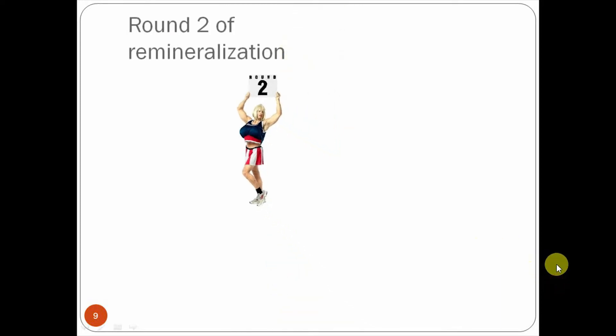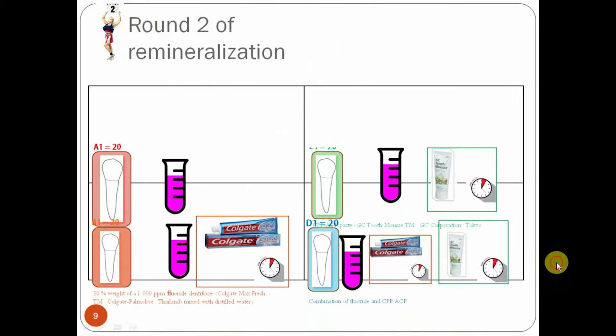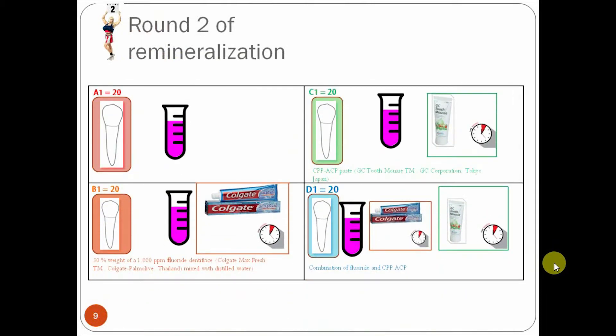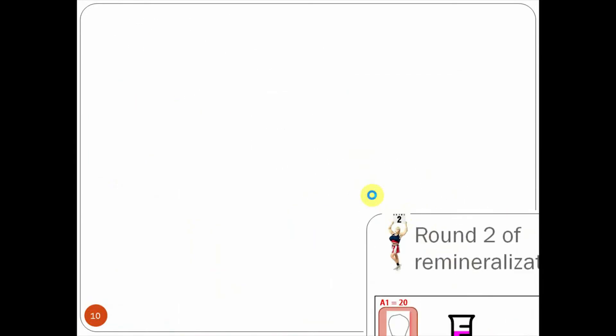So in round two remineralization, we basically did the same thing that we did in round one, except we're doing it with the subgroups of 20. So group A1, again, regular, the pink solution. I'm calling it pink to make it easy to remember. B1, we exposed to fluoride. C2 was to the GC tooth mousse, and D was a combination. Just like in round one, every week we change the pink remineralizing solution, and we take QLF images every week, and we stop after there is no changes.